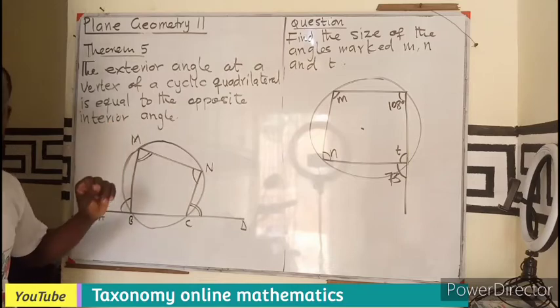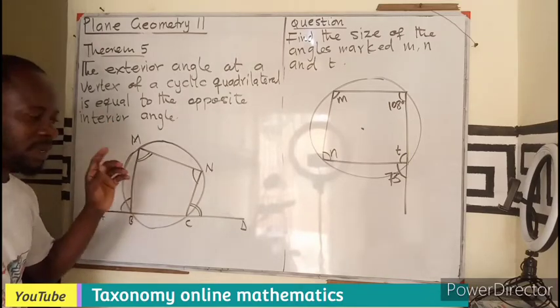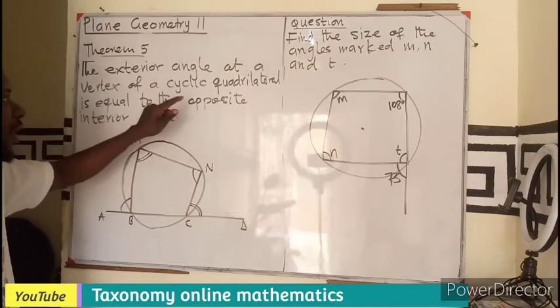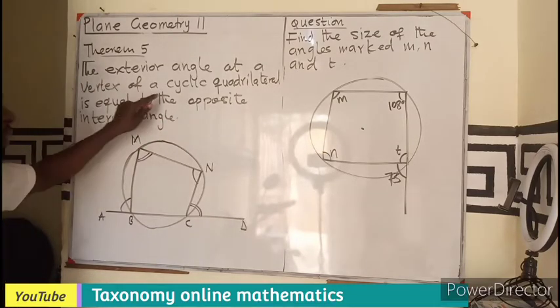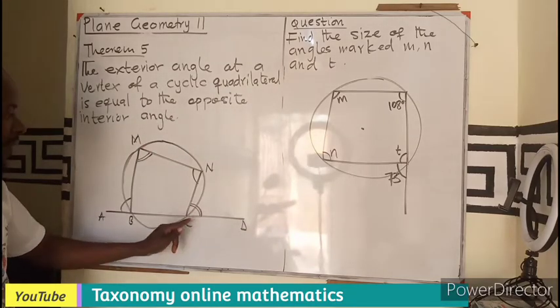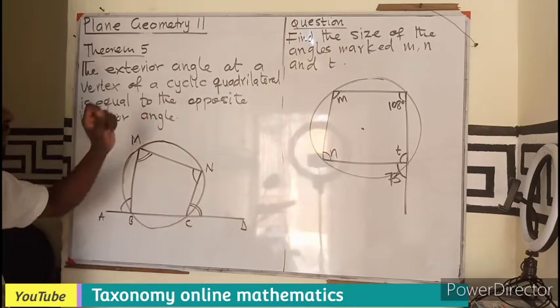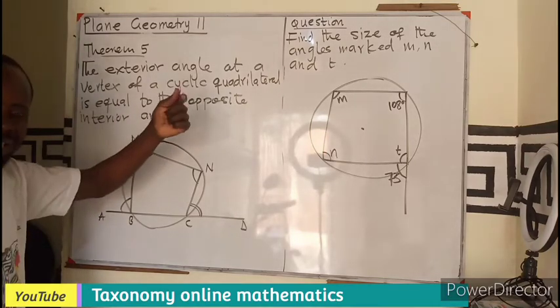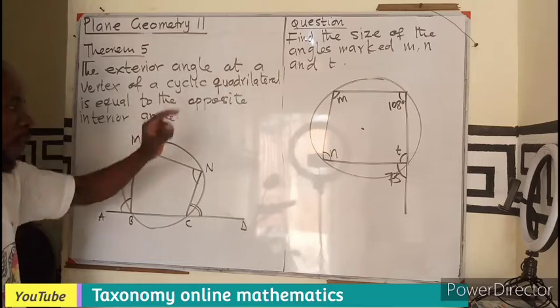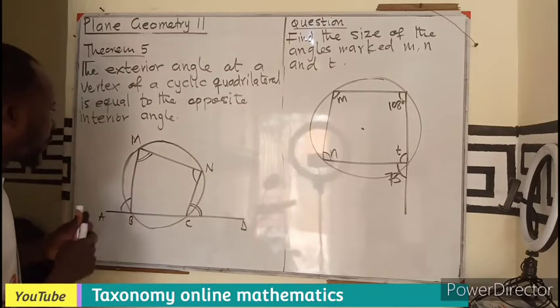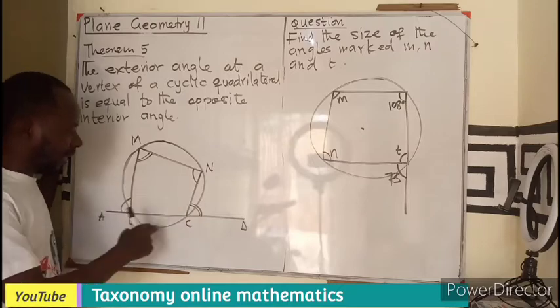Theorem 5 is about quadrilateral, cyclic quadrilateral. They are saying that the exterior angle at the vertex of a cyclic quadrilateral is equal to the opposite angle in the interior, or opposite interior angle. So looking at this, this is a cyclic quadrilateral.